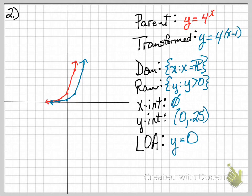Next, we look at number 2. The transformed function was y equals 4 to the x minus 1. It gave us a parent function of y equals 4 to the x. You see those in red and blue. The domain is all real numbers. The range is, again, greater than 0.